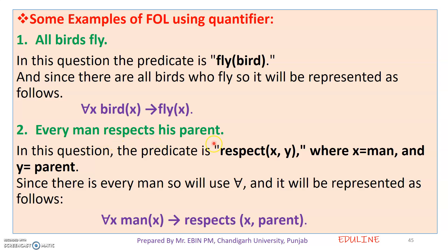Second example: 'Every man respects his parents.' Since it uses 'every,' this is a universal quantifier. The predicate is 'respect(x, y).' The representation is: 'for all x, where x is a man, x respects his parents.' This is our representation.